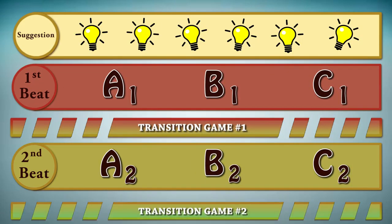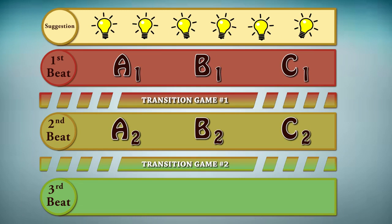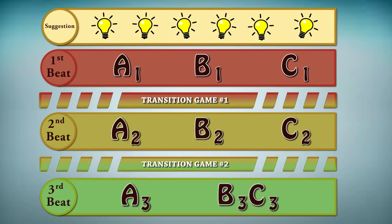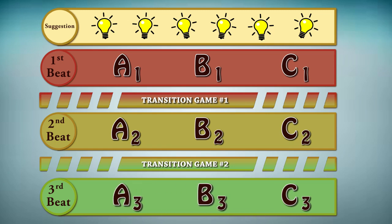After the second beat, you have another intermission game. Then you start the third and last beat. Now you don't have rules anymore. The scenes can mingle and cross over — you can have A and B together, even all three of them together. You can reuse the game of the scene from the second beat and explore it even further. Everything is permitted to finish it with a big bang. And voilà, that's the Harold.